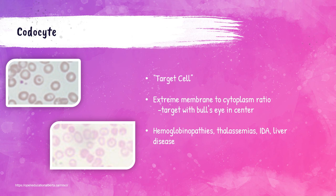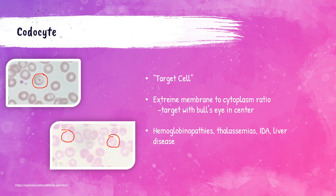Codocytes or target cells are going to have that bullseye target-looking center, and they're called target cells because they literally look like a target with a bullseye center. Patients that have codocytes — these are seen in iron deficiency anemia (IDA), hemoglobinopathies, thalassemia, liver disease, and also in people with sickle cell anemia. We've talked about all those disorders in this presentation already.